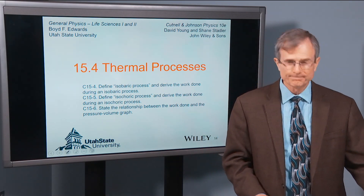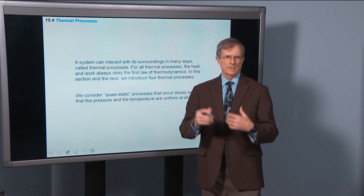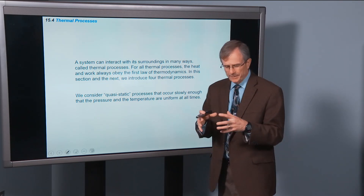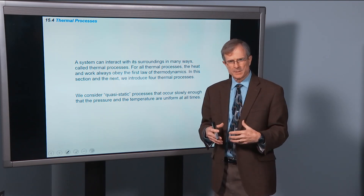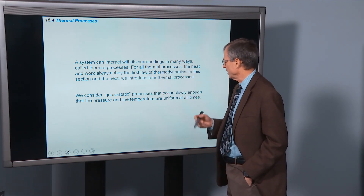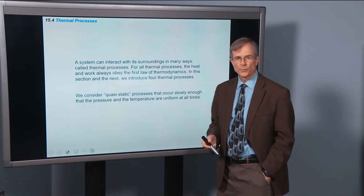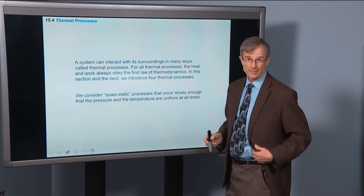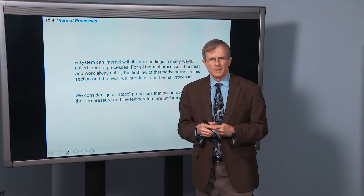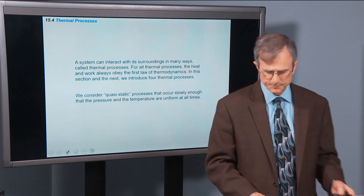We're going to talk about thermal processes. A process is where the system interacts with its surroundings. A manner in which a system can interact with its surroundings is called a thermal process. For all thermal processes, the heat and the work always obey the first law of thermodynamics: delta U equals Q minus W. We're going to consider quasi-static processes that occur slowly, so that the temperature and the pressure everywhere in the system are uniform at all times.